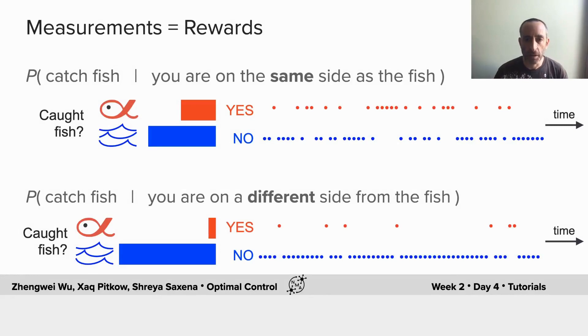What you should have seen is a sequence of stars indicating when you caught the fish, and you should see more stars when you're on the same side as the fish than when you're on the opposite side from them.